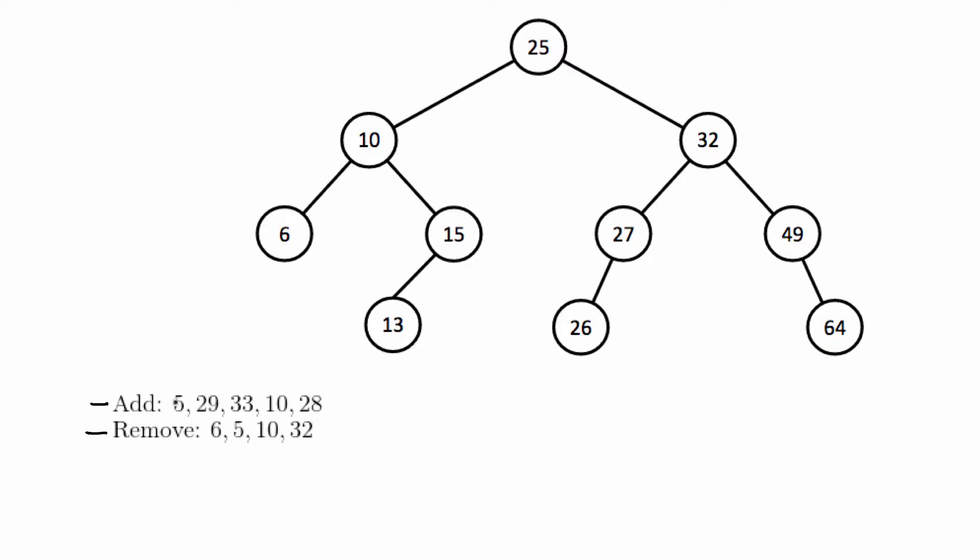The first one we're going to do is 5. 5 is less than 6 so it would be on the left subtree of 6. We add that leaf there and we're done with that.